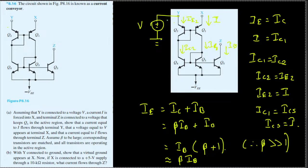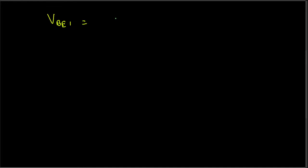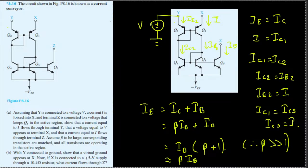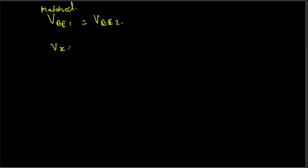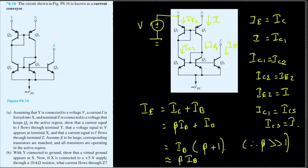Since the transistors are matched, vbe1 = vbe2. The base-emitter voltage vbe = vb − ve. Because vbe1 = vbe2, the voltage at terminal X equals the voltage at terminal Y, which is v.